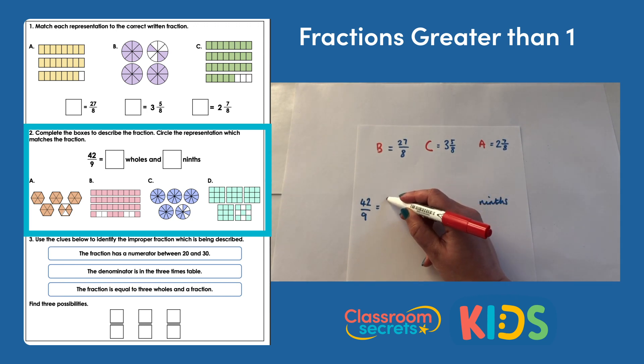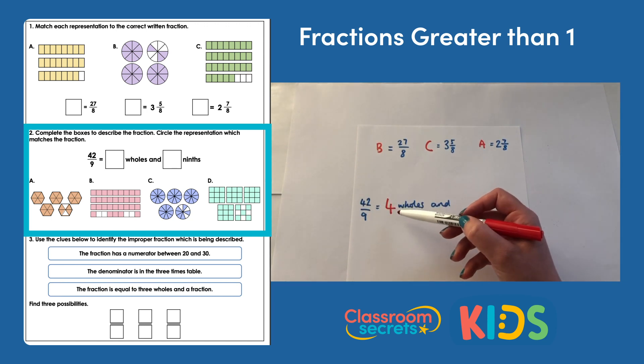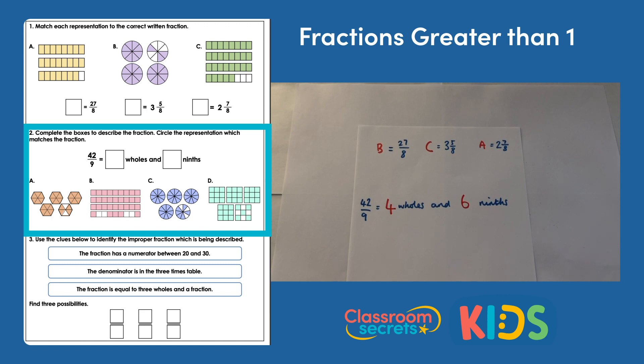So that means there are four wholes within that fraction. So my four wholes would take me up to 36, because four lots of nine are 36, and then I have six parts left over. So my six parts are actually ninths, so 42 ninths is equal to four wholes and six ninths.